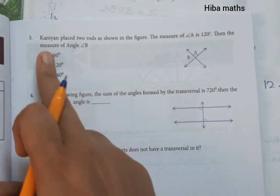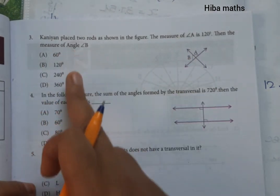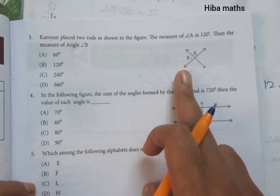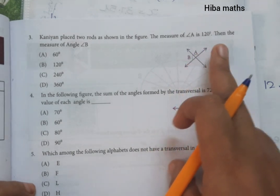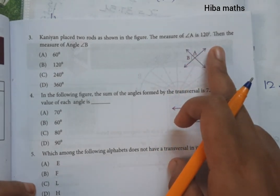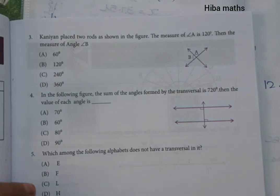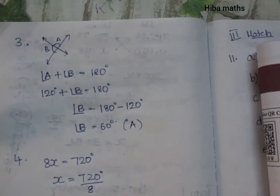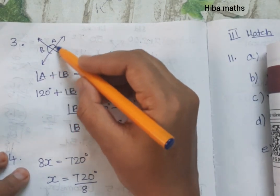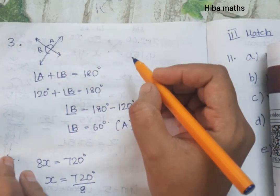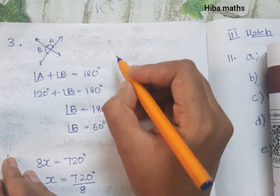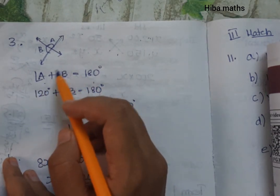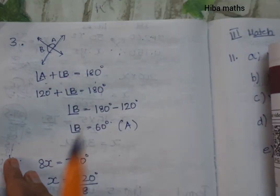Third question: Canian placed two rods as shown in the figure. The measure of angle A is 120 degrees. Find the measure of angle B. In the diagram, there is a linear pair. The sum of a linear pair is equal to 180 degrees.